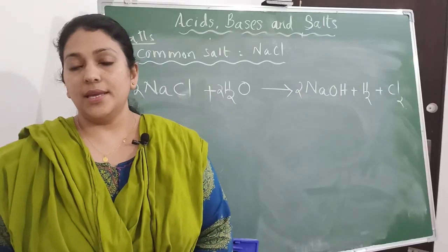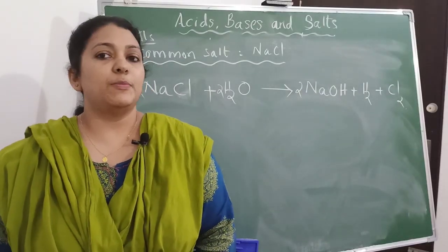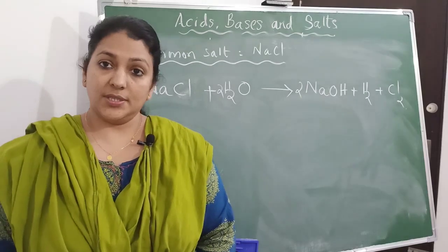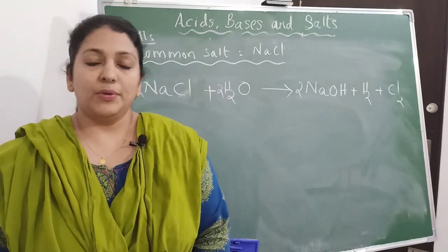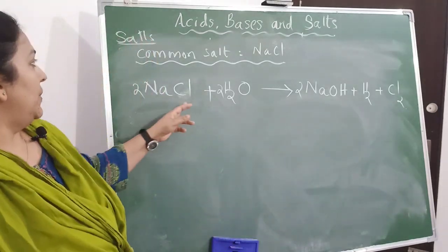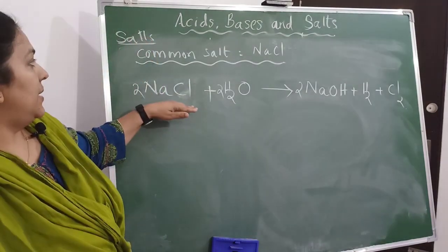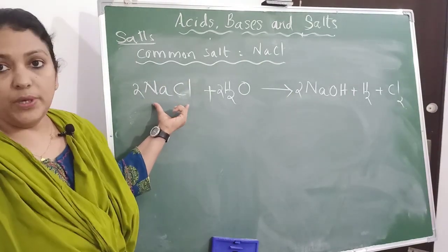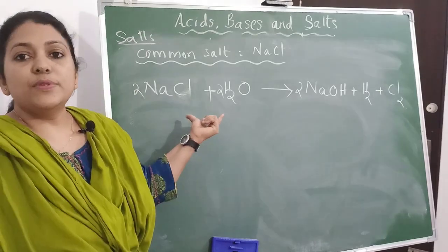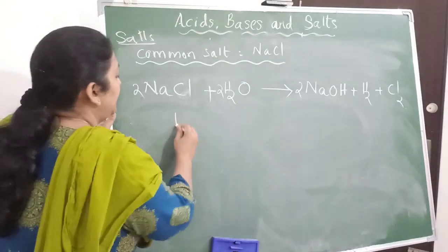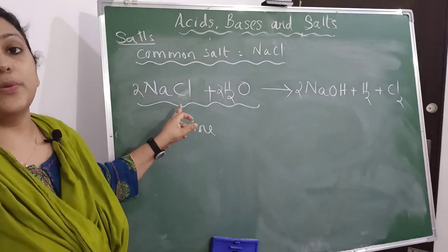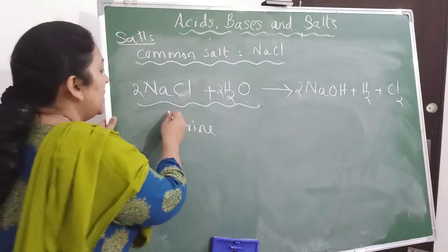Common salt is a raw material for many different types of chemicals like sodium hydroxide, chlorine, hydrogen, washing soda, baking soda, and many more. An aqueous solution of sodium chloride is called brine.